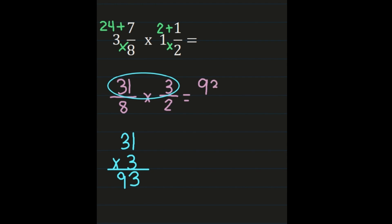Then we multiply our denominators: 8 times 2 is 16. If you can leave your answer as an improper fraction and it can't be simplified, 93 sixteenths is your answer.